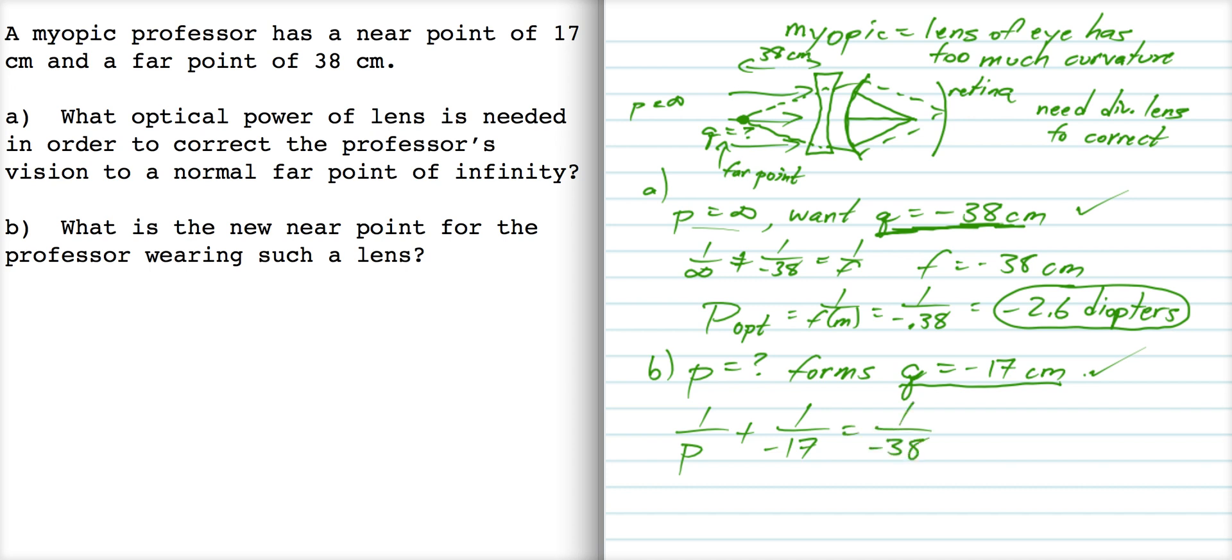Okay, so if I do it this way, 1 over negative 38 minus 1 over negative 17, if I do that in decimals, I get 0.0325, which gives me a P of 31 centimeters.